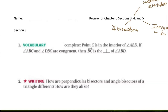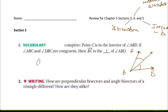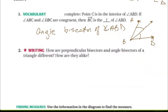Vocab: point C is in the interior of angle ABD. Let's draw that angle ABD. If angle ABC and angle DBC are congruent — so if this angle is congruent to this angle — then BC is an angle bisector of angle ABD.